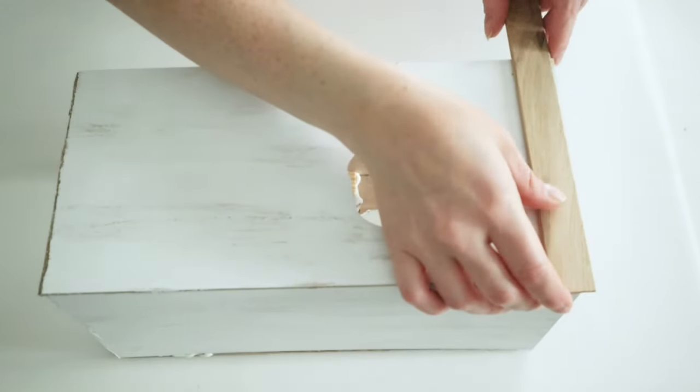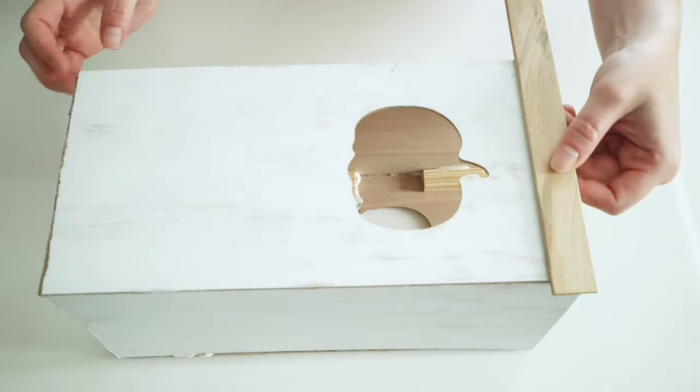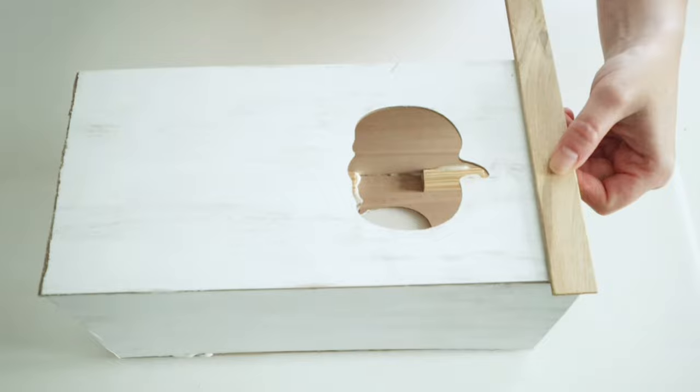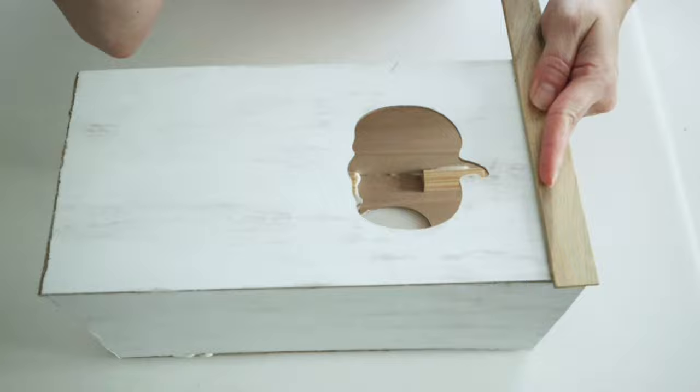But since I couldn't find anything that would fit the top and the bottom, I'm just using some of these paint stir sticks. I picked these up at Walmart and I just cut them down and I'm going to put them on the top and around the bottom just to finish this off.